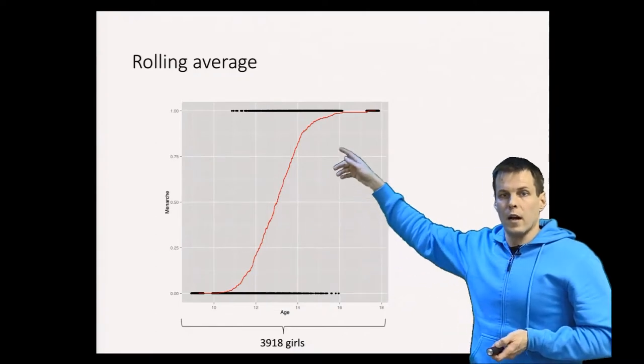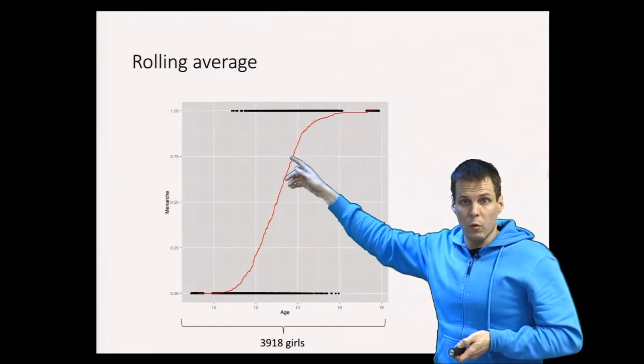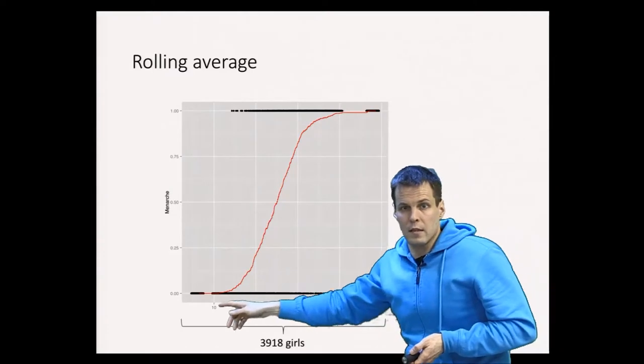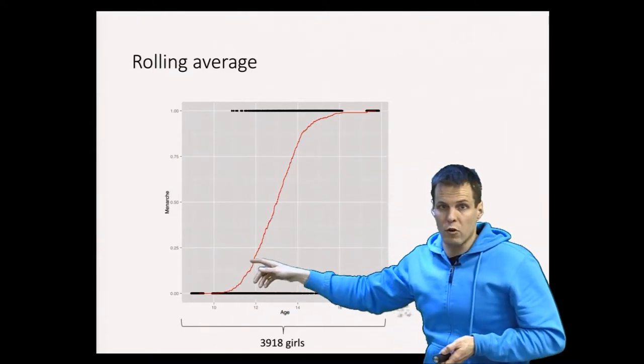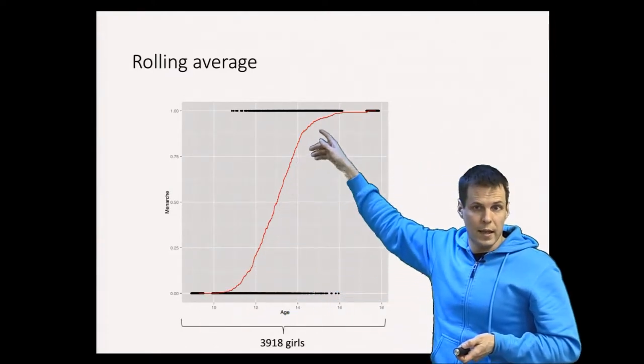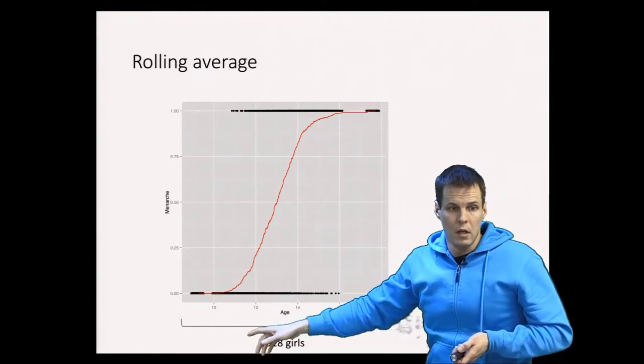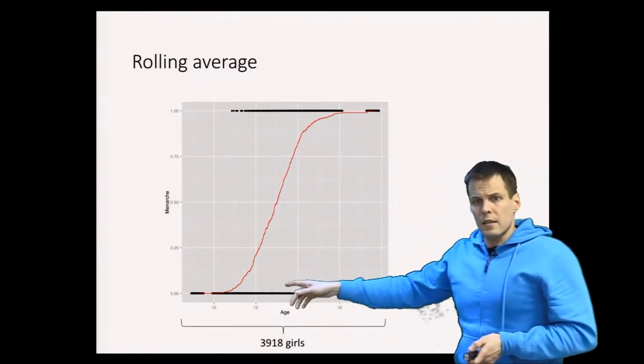And finally, when we calculate for all possible windows and calculate the mean, we get this kind of a non-parametric curve. It's non-parametric because we can't express this curve as a simple function. We can see that this is an S-shaped curve.